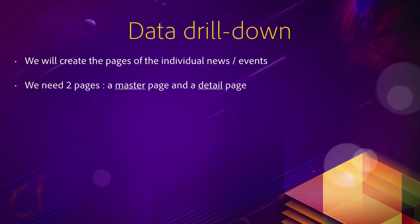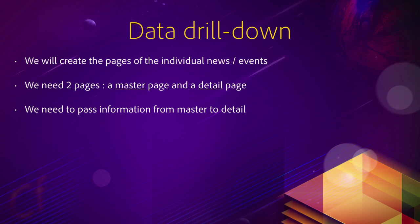To do that we need two pages: a master page and a detail page. The master pages are already created — we have one main page for the news and one main page for the events. In this chapter we will create the detail pages of those news and events. To do that we will need to pass information from the master page to the detail page — we will need to tell the detail page what news or what event to display.